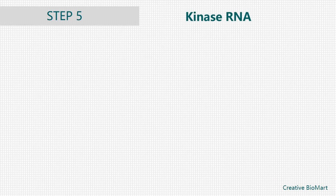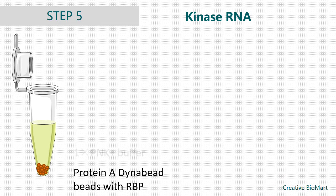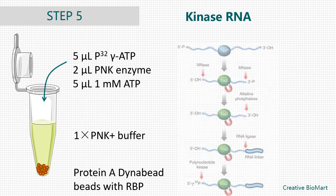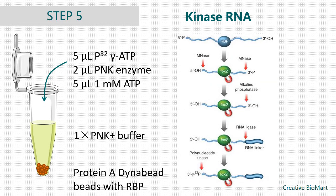Step 5, Kinase the Immunoprecipitated RNA. Resuspend beads in 80 µL of PNK+, and add 5 µL of phosphorus-32-labeled ATP and 2 µL of PNK enzyme. Incubate in a thermomixer at 37°C and centrifuge at 1,000 RPM for 20 minutes. Finish the reaction by adding 5 µL of 1 mM ATP. Let the reaction continue another 5 minutes at 37°C. Wash the beads 4 times with 1 mL of ice-cold PNK+. Resuspend the beads in 30 µL of PNK+ and 30 µL of LDS loading buffer.